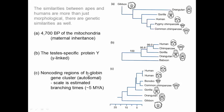If we use an autosomal gene like beta-globin, we can see some diversity within humans, but then humans relate to chimps, then gorilla, orangutan, and gibbon as the outgroup. We see the same pattern in all of these: the closest relatives to humans are chimps and vice versa. Within the great apes, orangutans are basal to the gorilla-human-chimp clade, and within that clade, gorillas are basal to humans and chimps.